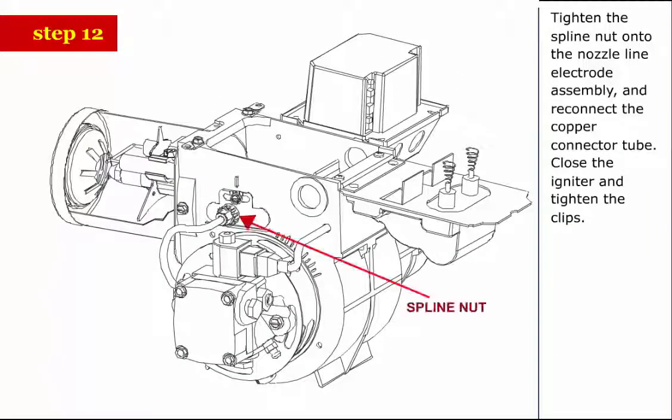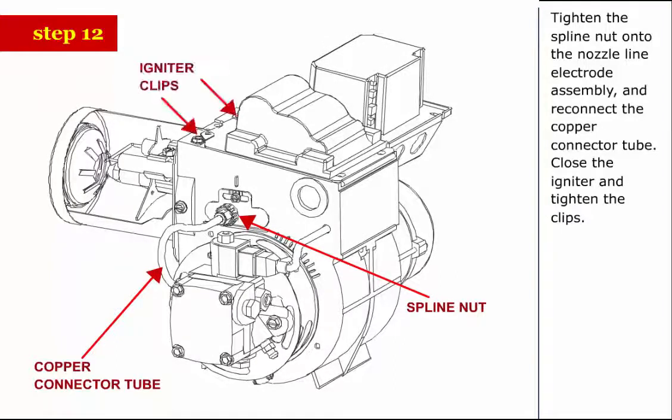Step 12: Tighten the spline nut onto the nozzle line electrode assembly and reconnect the copper connector tube. Close the igniter and tighten the clips.